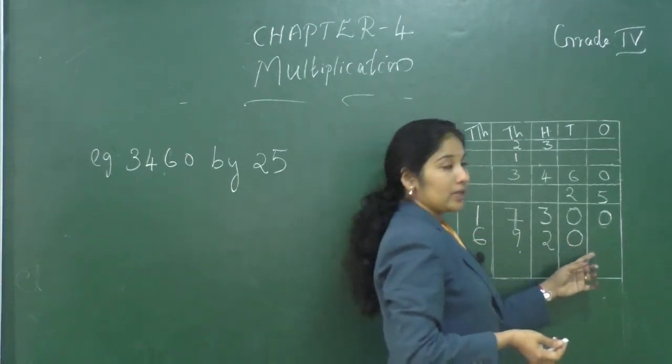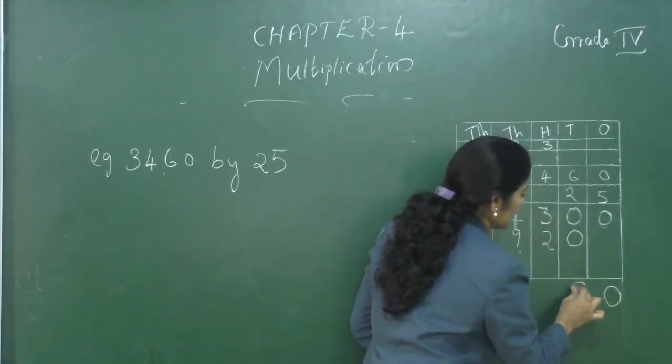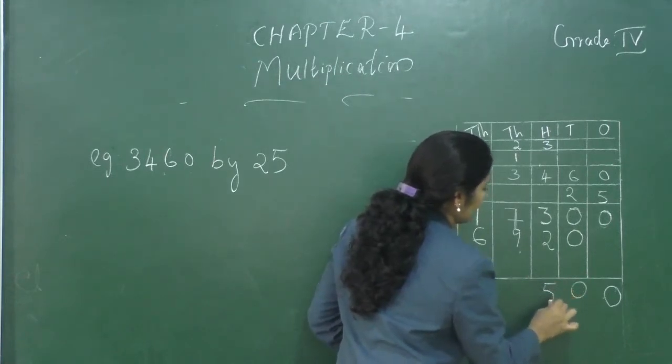Now, we can find the sum. 0. 0 plus 0? 0. 2 plus 3? 5.